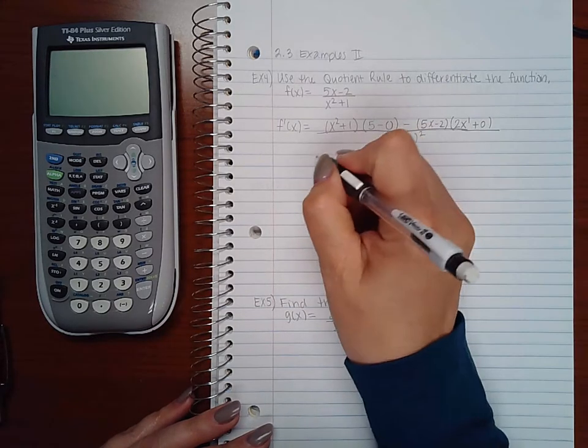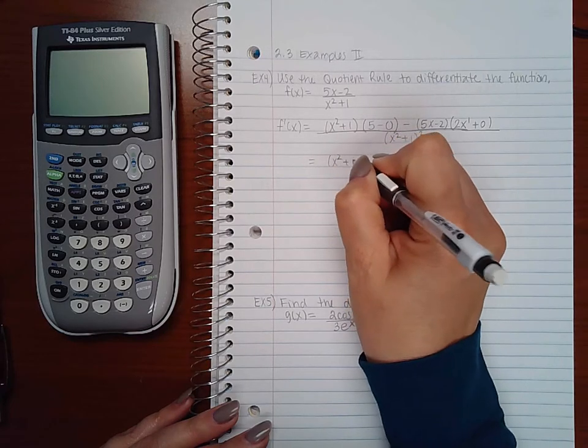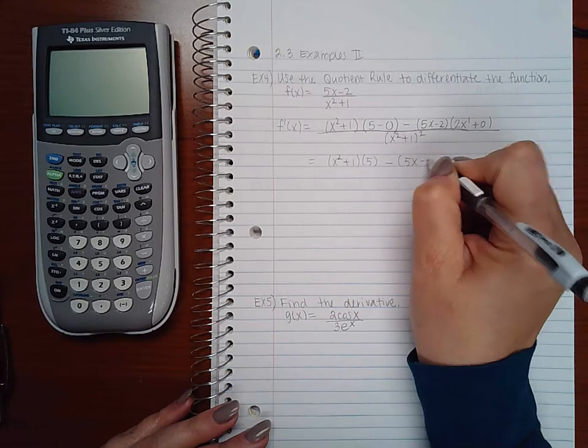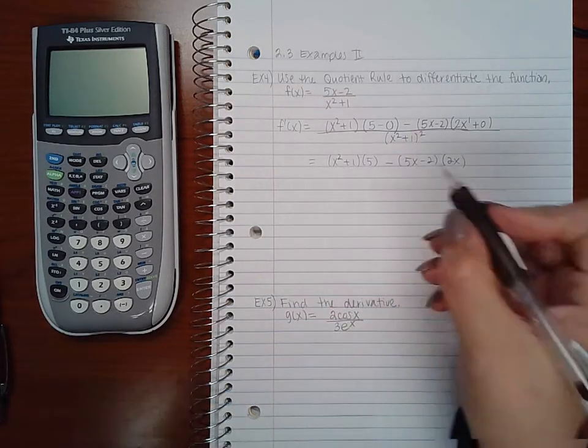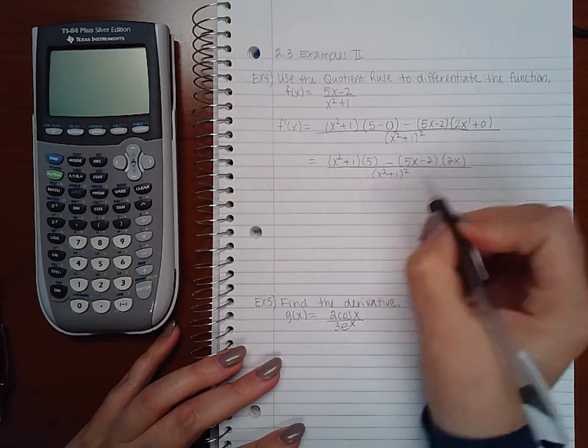Now let's simplify this. We end up with x squared plus 1 times 5 minus 5x minus 2 times 2x, all over x squared plus 1 squared.